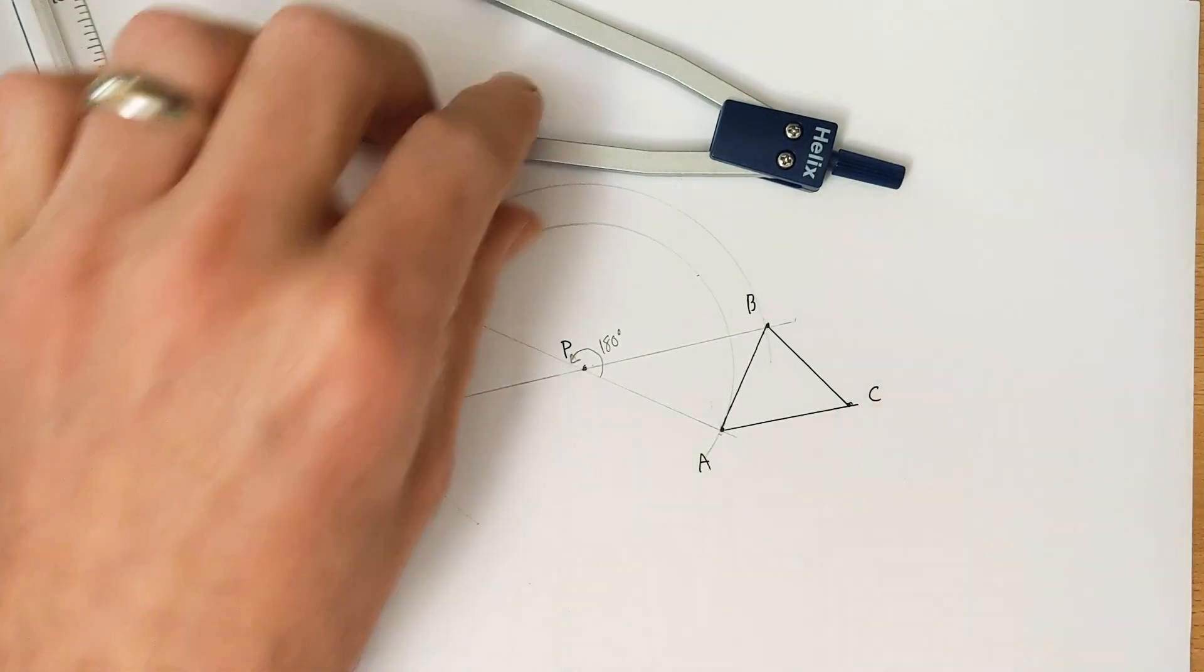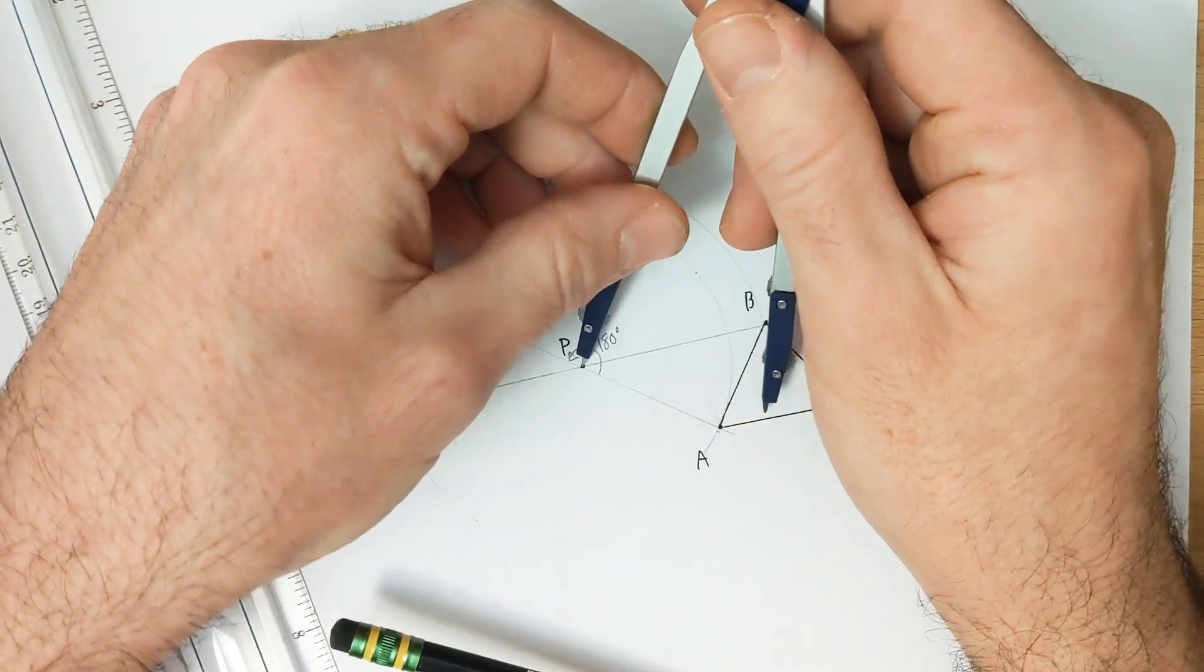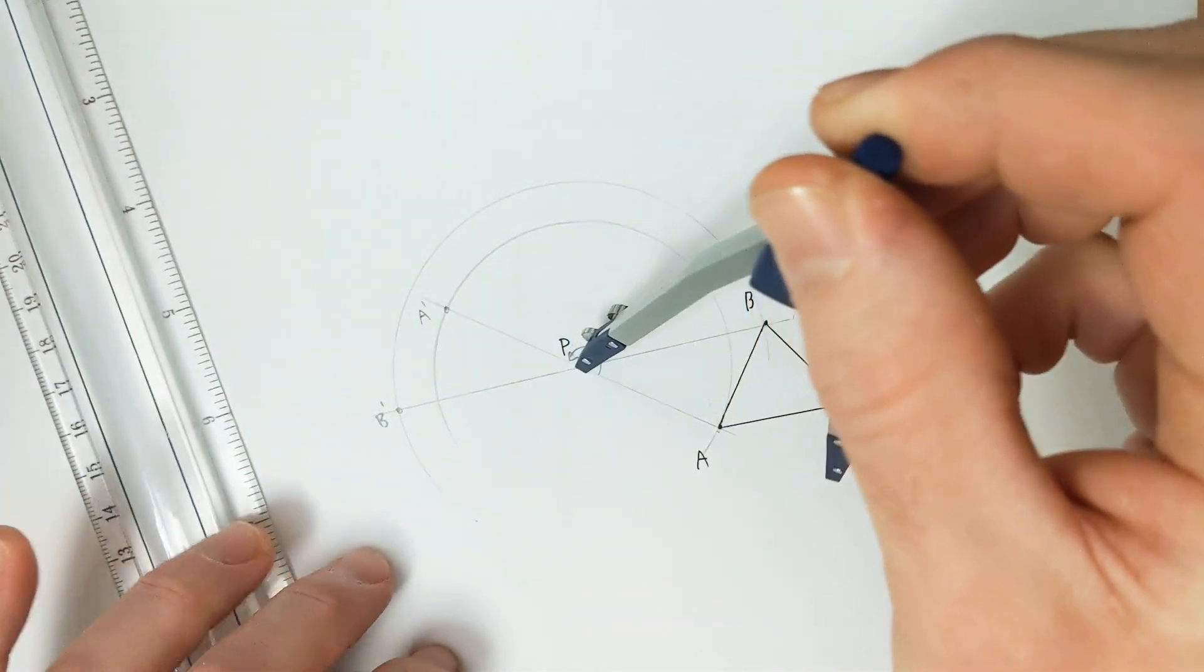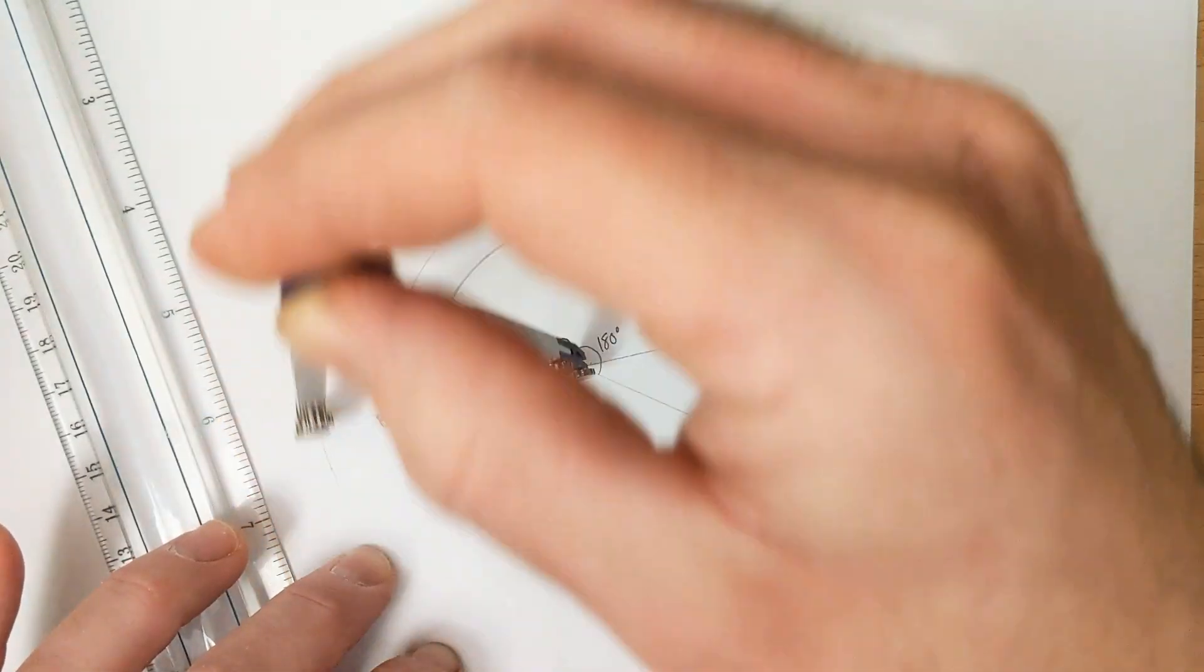And then finally, our last point, point C, which is the one that's furthest away, so it'll have the largest circle. Draw a semicircle.